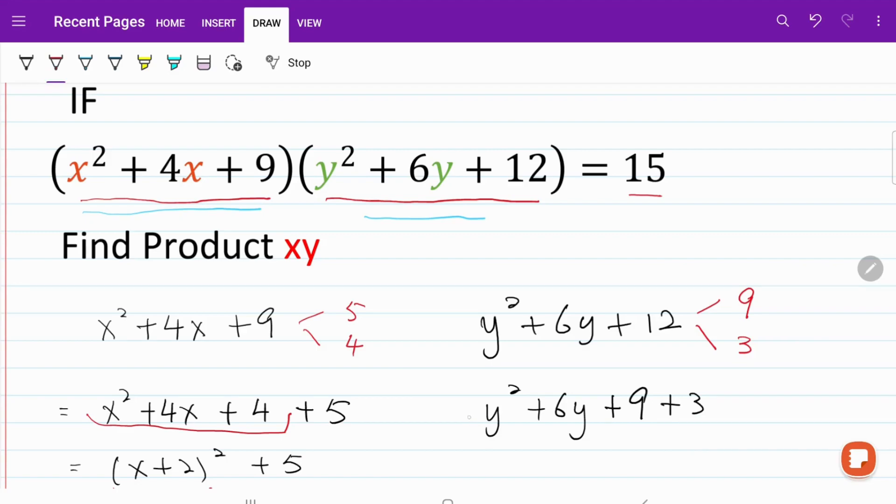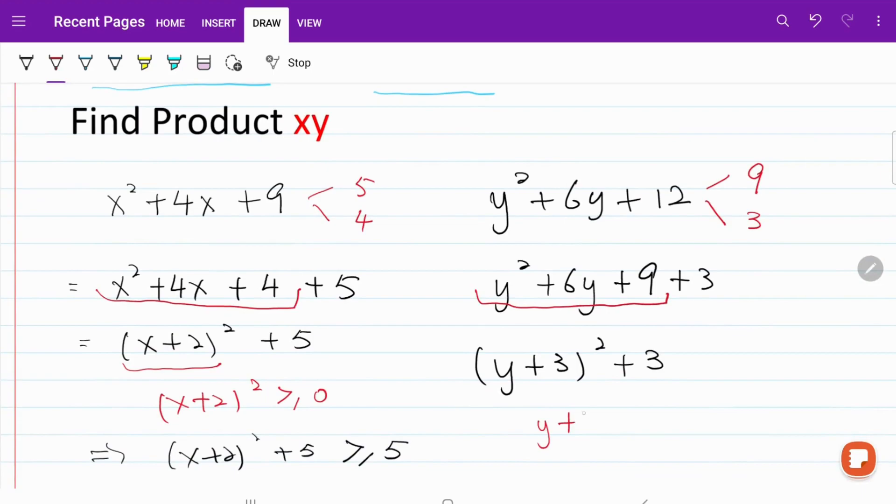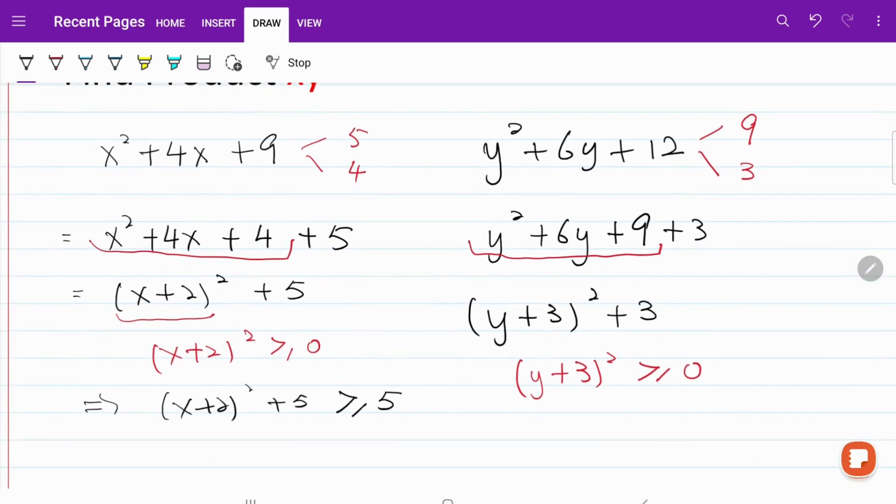And again, if you look at the first part right here, we can turn it into a perfect square. So now we have y plus 3 squared plus 3. Just like what we have in the previous case, y plus 3 squared must be bigger than or equal to 0. Implying y plus 3 squared plus 3 must be bigger than or equal to 3.